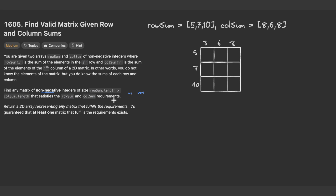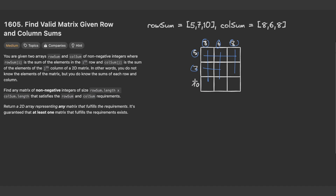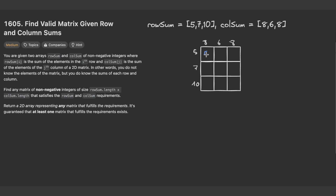We do not know the elements of the matrix, but we do know the sum of each row and column. What we want to do is find any matrix of non-negative integers of size n by m that satisfies the row sum and column sum requirements. For example, on the column level they should sum up to eight, six, and eight, and on the row level they should sum up to five, seven, and ten.